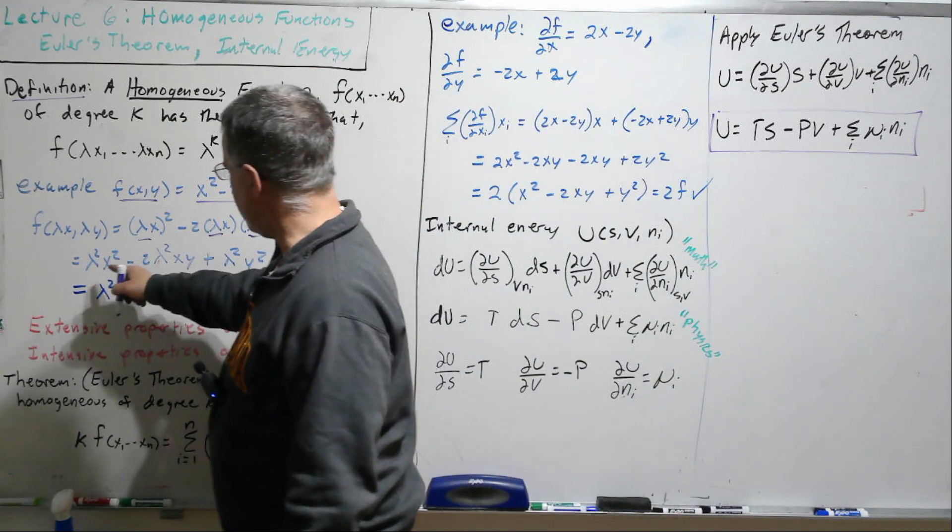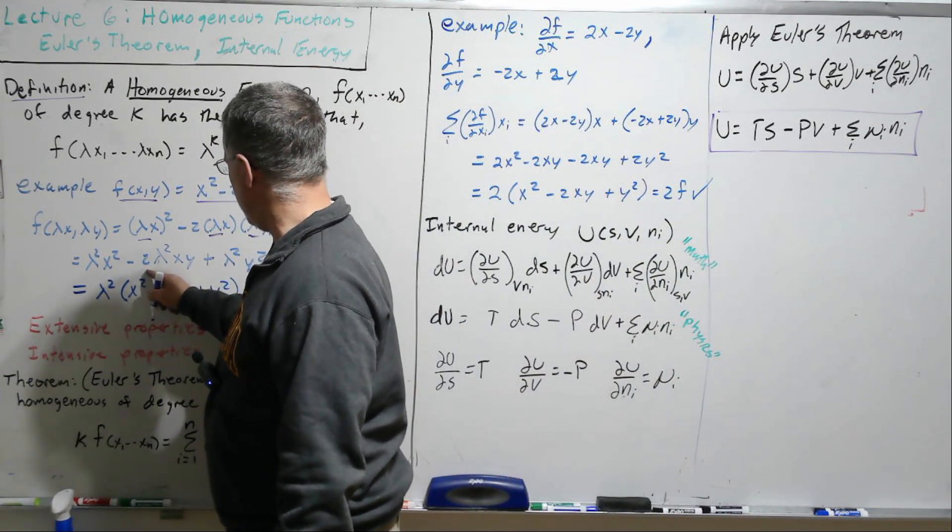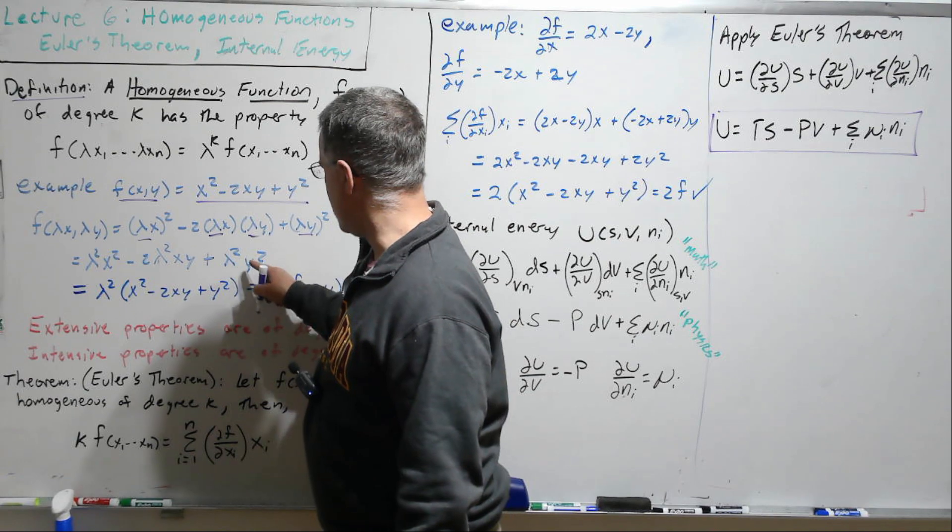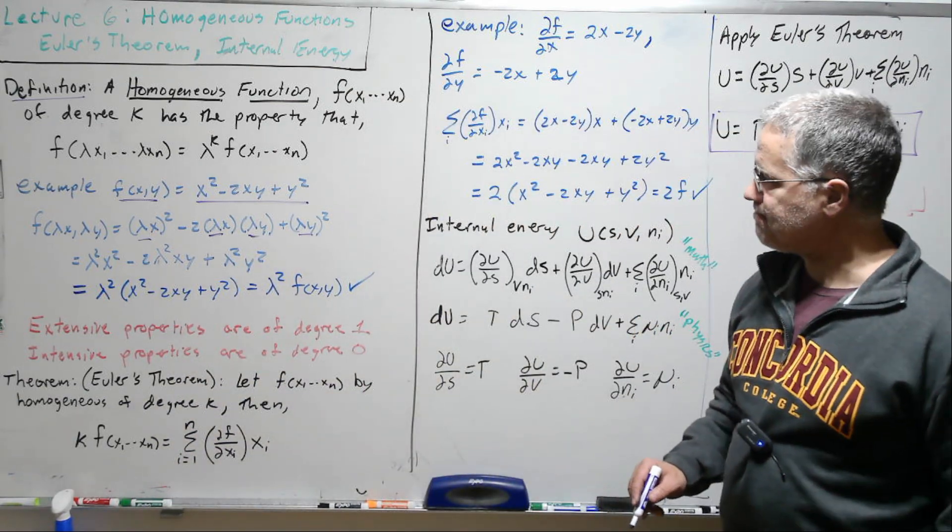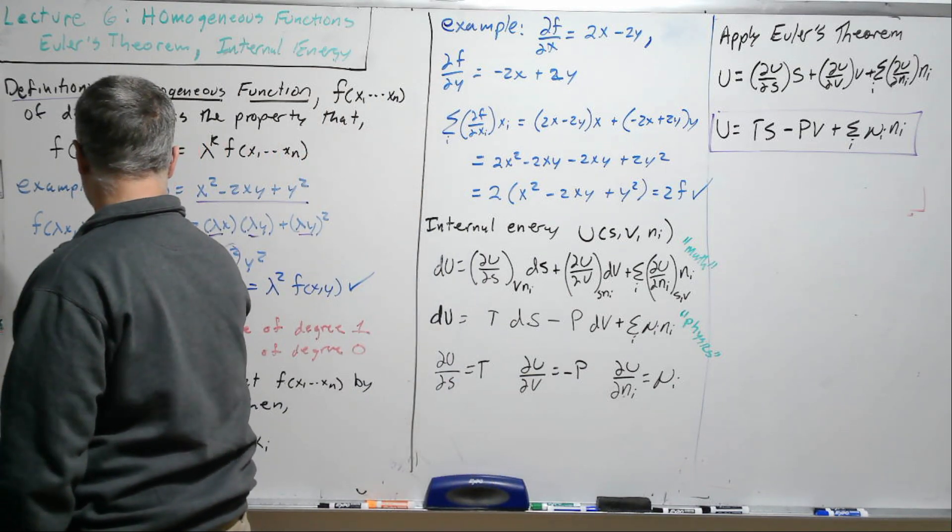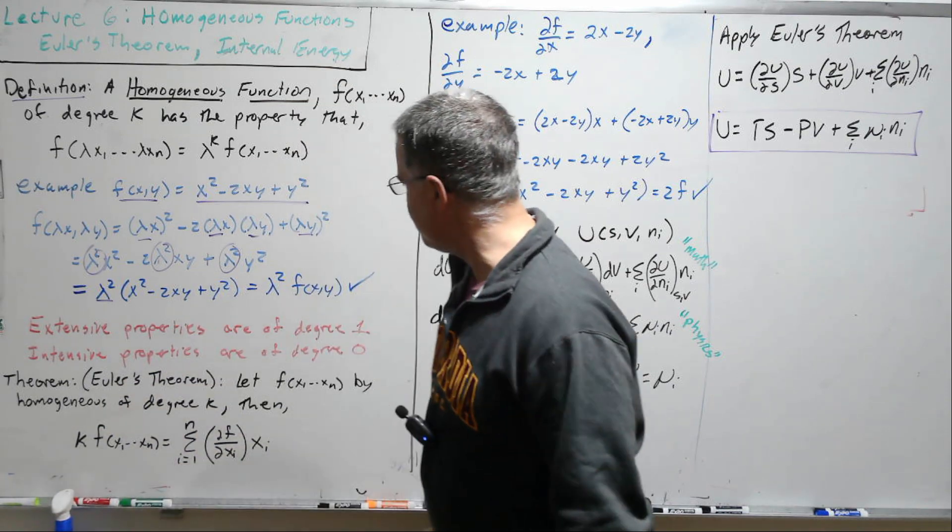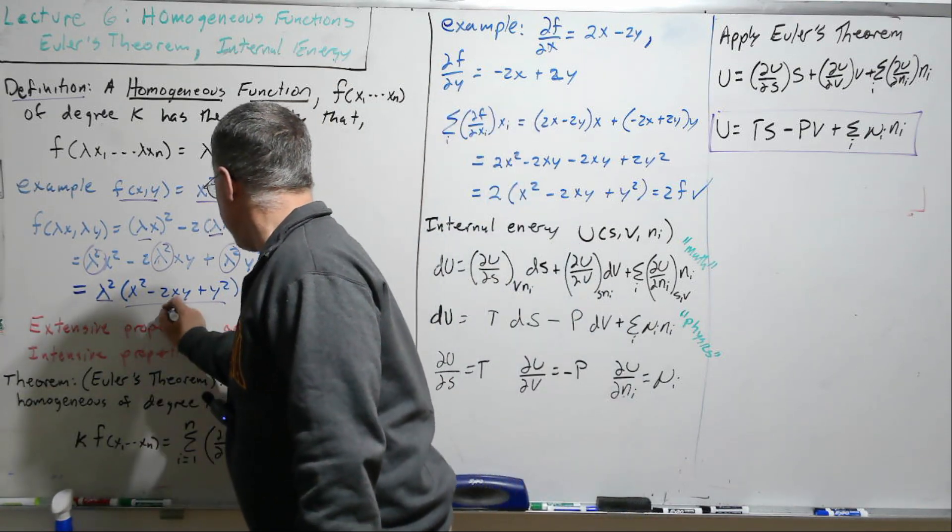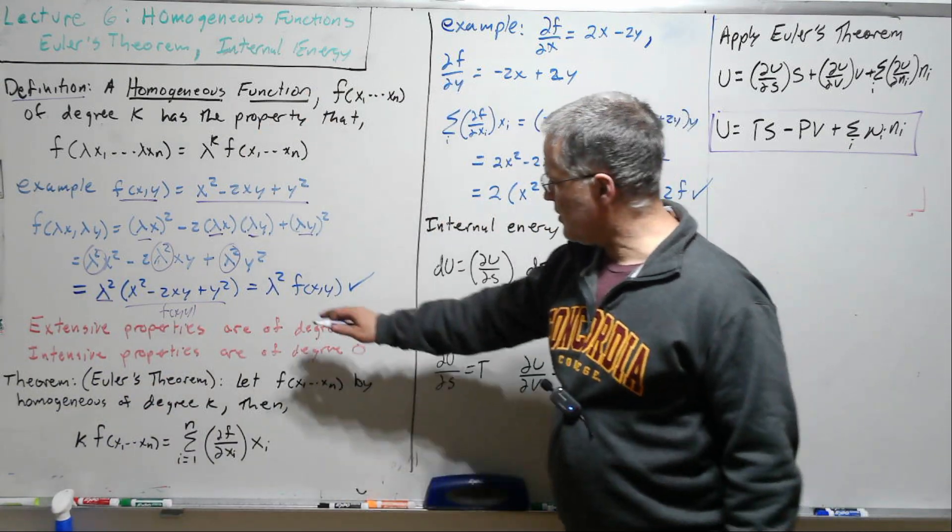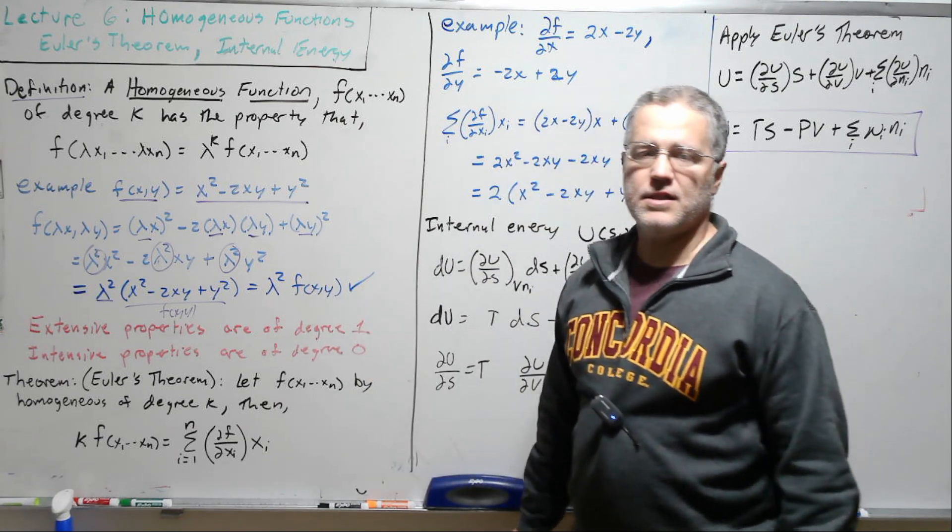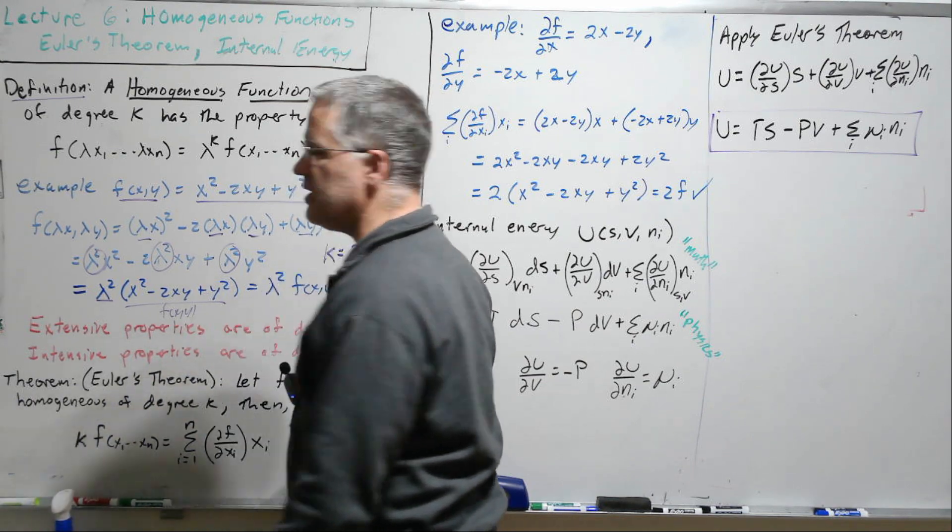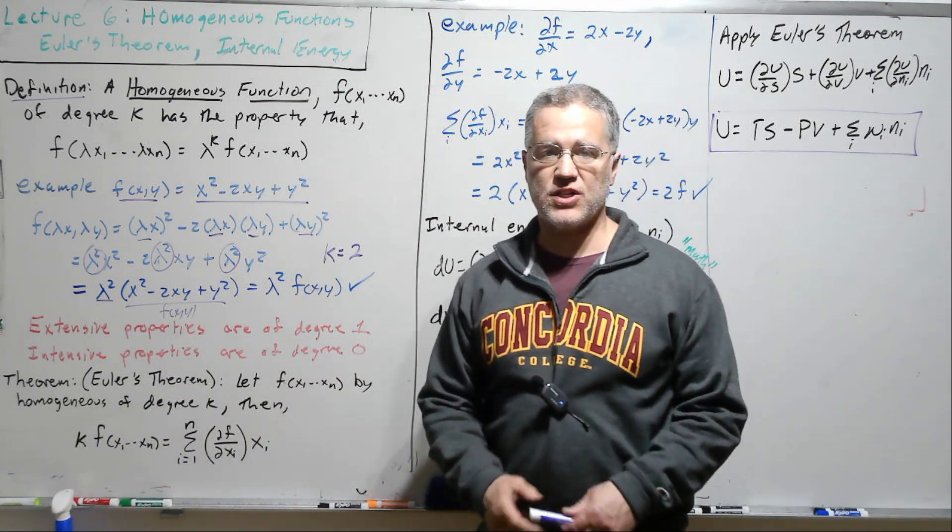So this term becomes lambda squared x squared. This becomes 2 lambda squared xy and then this becomes lambda squared y squared. There's a common lambda squared in each which we can pull out and then what we have left is in fact f of x and y, the original function. So we get something of the form lambda squared f of x. So here we would say k is equal to 2 and we would say this is a homogeneous function of degree 2.